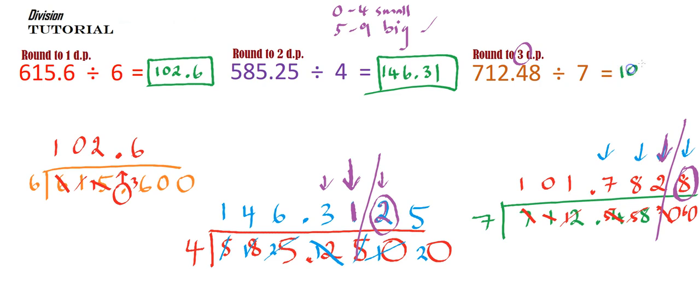It's 101.78. It's not 2. It has to go up because my indicator number is big. So, it's 3. And that is the correct answer.